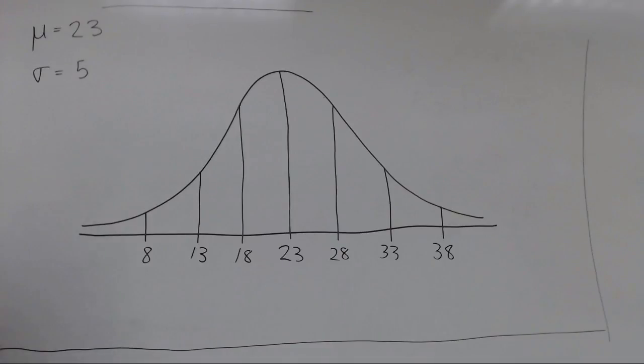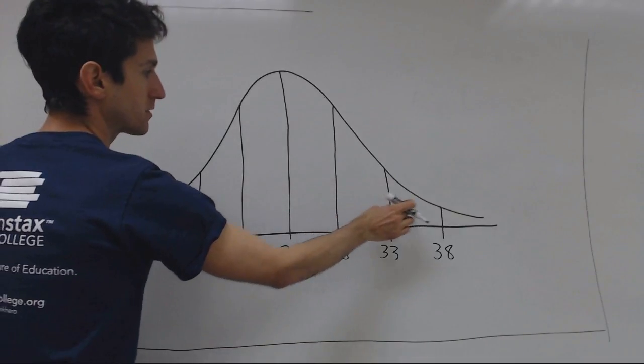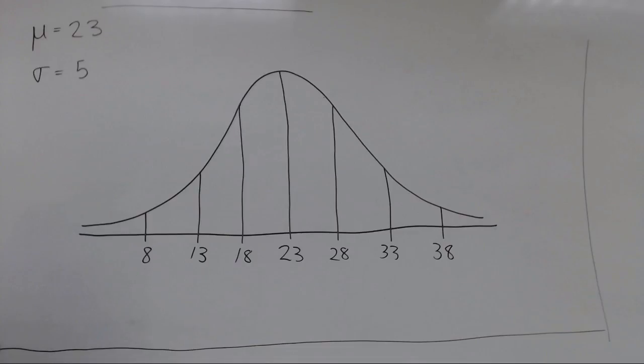Now we just need to label the areas in the middle. The total area can be thought of as 100%, and we will just talk about the percentages of each of these areas.